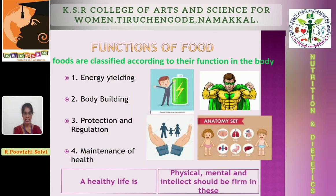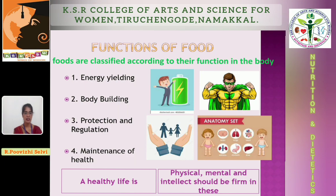One gram of fat gives 9 kilocalories. The next function is body building — food rich in protein. Protein provides all essential amino acids in correct proportion for body tissues. The next function is protection and regulation. Food high in protein, vitamins, and minerals regulates body functions and maintains individual organs — for example, heartbeat, water balance, and body temperature.